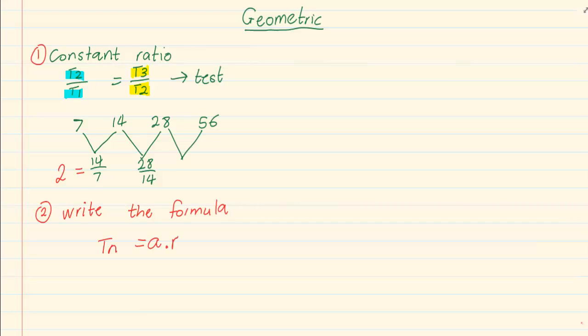Now the formula for geometric is Tn is equal to A times R to the power of N minus 1. Now the common mistake that pupils make is they usually combine this A and R which exponentially is incorrect. So you have to be familiar with exponents before you do this.